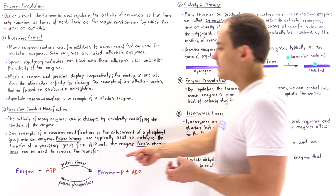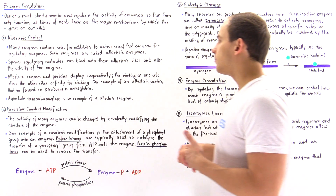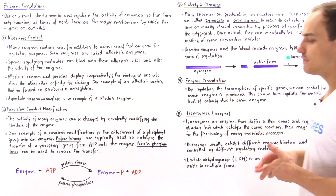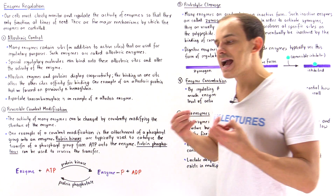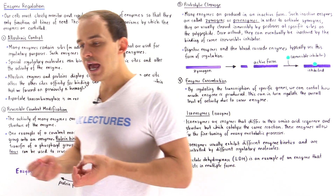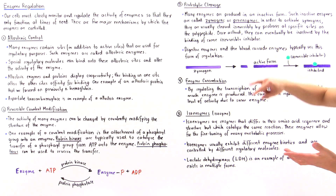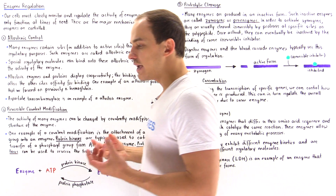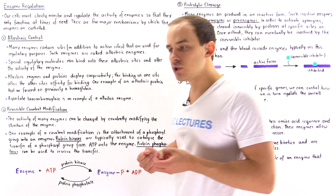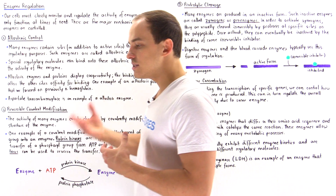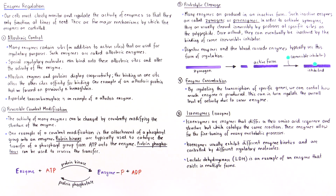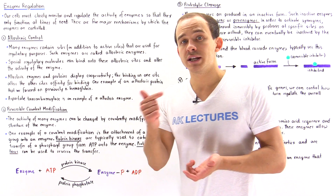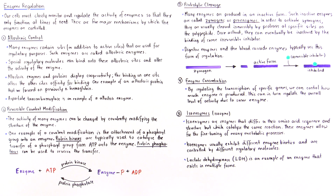The third mechanism of control is proteolytic activation or proteolytic cleavage. Many enzymes produced by the cells of our body are produced in their inactive form. The precursor inactive form of an enzyme is called a zymogen, or sometimes a proenzyme. In order to activate these zymogens, special molecules called proteases are used to cleave at specific sites, and that is what activates these polypeptides. Once activated, they carry out their function until inhibited by some type of inhibitor, usually an irreversible inhibitor.